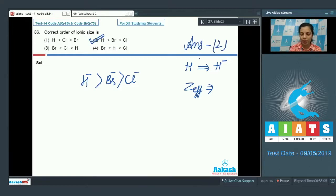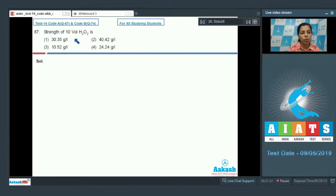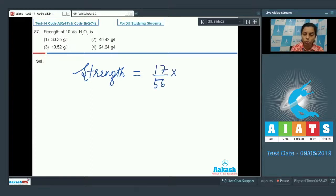Let's take the next question. The question based on volume strength of H₂O₂: strength of 10 volume H₂O₂ is, what's the strength in this case? Simple formula is 17 by 56 into volume strength, whatever be given into 10. So if you solve this...